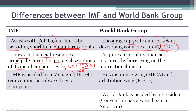For more details about GAB and NAB, please refer to our video dedicated to IMF. The World Bank Group, on the other hand, acquires most of its financial resources by borrowing from the international market, and gets only a small amount from its member countries. So in summary, IMF gets most of its money from member quota subscriptions, while the World Bank gets most of its money from the international market.